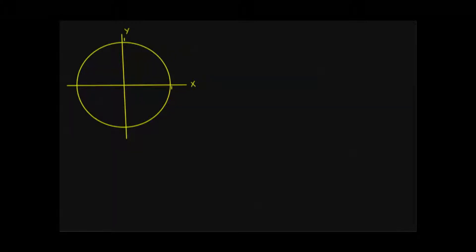Now we're going to get a little bit more in-depth in our analysis of the unit circle. The first thing I want to talk about is the total circumference of the unit circle. We have a formula for circumference: the circumference of a circle is equal to 2πr, where r is the radius of that circle. Because it's the unit circle, we have a radius of 1, so the circumference here is going to be 2π times 1, or simply 2π.